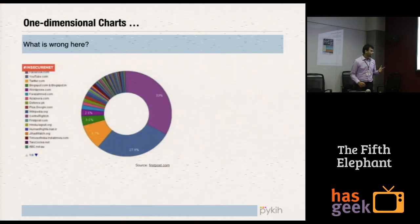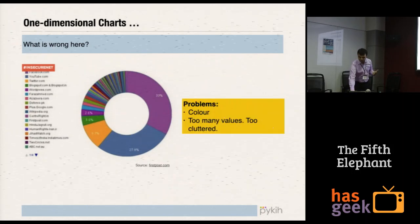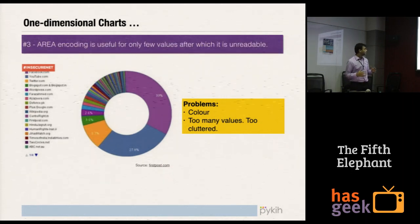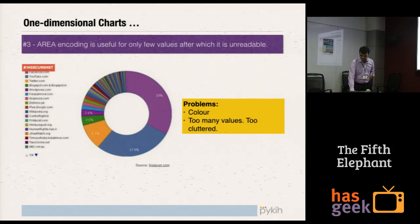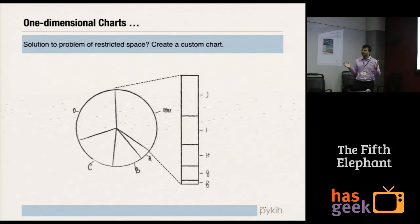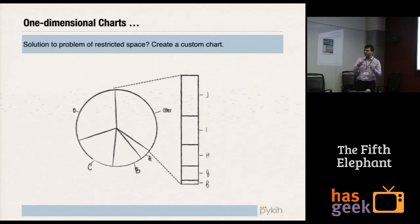Here is another pie chart. What is wrong with it? There are way too many values — it's not readable at all. This teaches us that area encoding has its own limits; you can't have infinite values in area encoding. How should you solve this? If you have more than five slices, combine all of them into 'other.' If you still need to zoom in, click on 'other' and there should be another chart coming in.